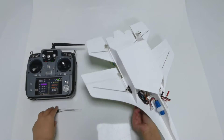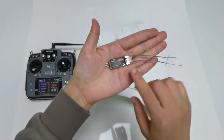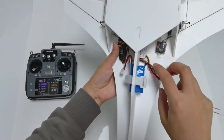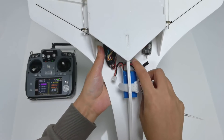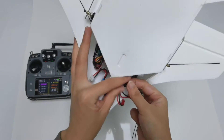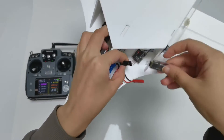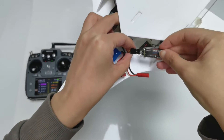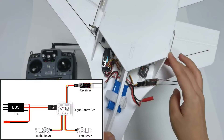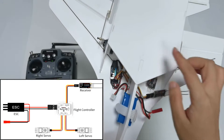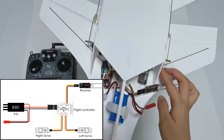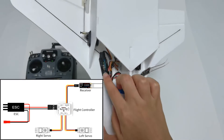I take the R12DSM as an example in this video. The SBUS or PPM channel is connected to the receiver, so I connect it to the R12DSM. Make sure the polarity is not reversed. Channel 1 is connected to the left servo, channel 2 is connected to the right servo, and channel 3 to the ESC.